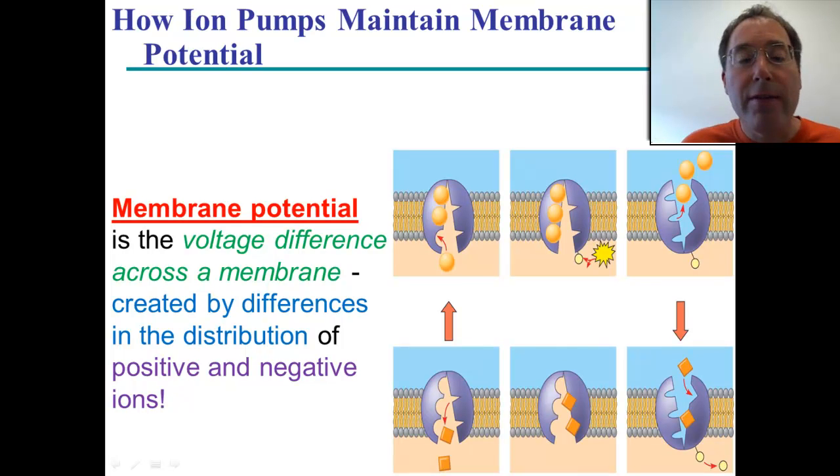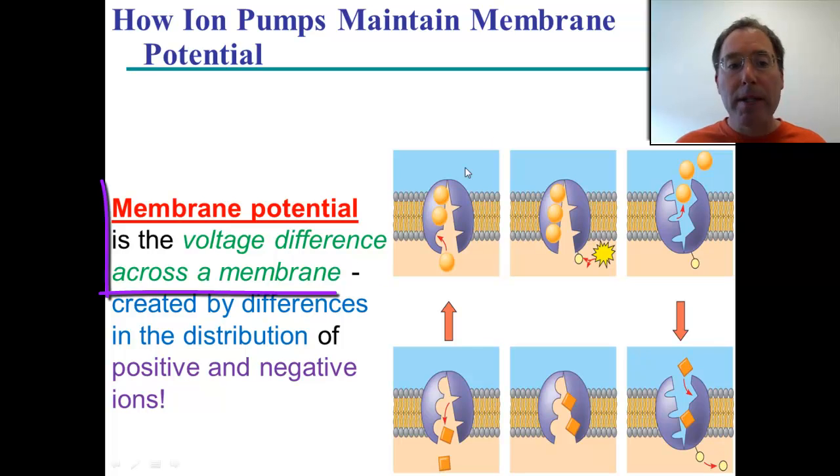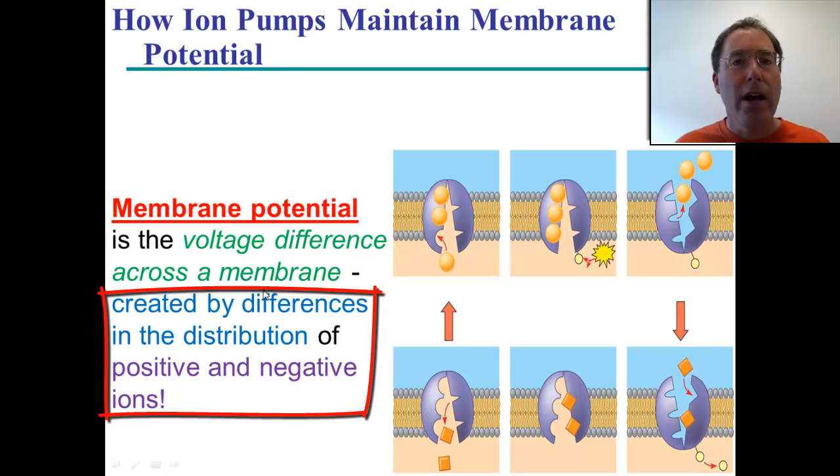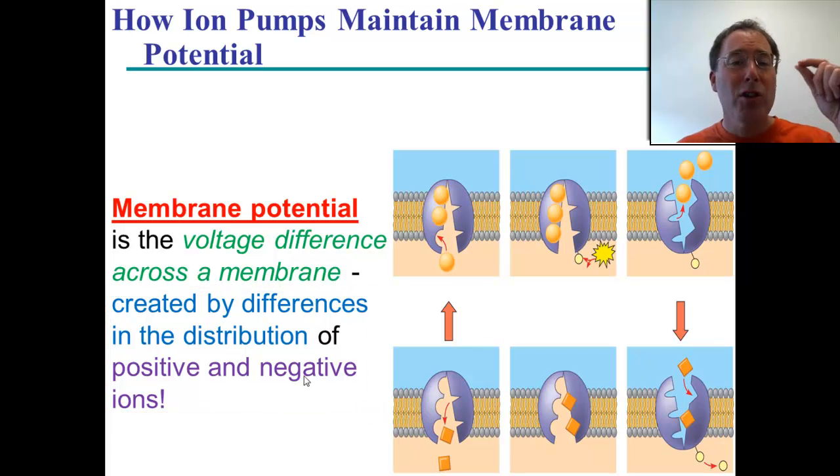To finish out 7.4, we need to talk about membrane potential. Membrane potential is the voltage difference on either side of a membrane as a result of an unequal distribution of positive and negative ions or an unequal distribution of the same charge of ions like in the sodium potassium pump.